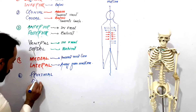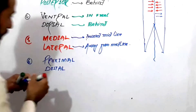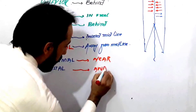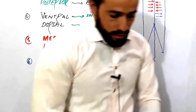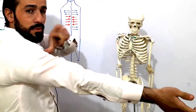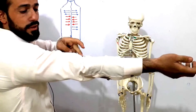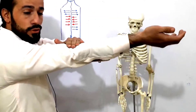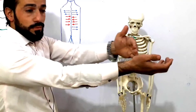Proximal and distal — proximal means near and distal means away or far. Look carefully: my elbow joint is proximal to my shoulder joint. There is a very little distance between the shoulder and elbow joint, but there is a very much distance between the wrist joint and the shoulder joint.